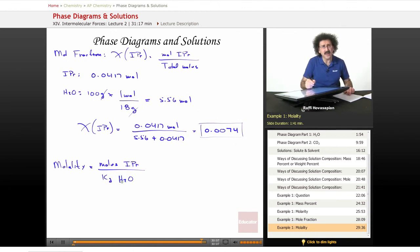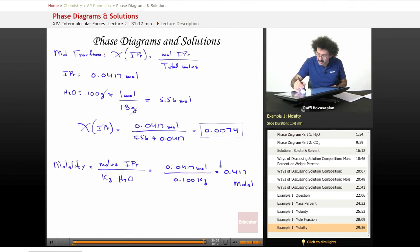Equals 0.0417 mole divided by 0.100 kilogram, right? 100 grams, 0.1 kilograms equals 0.417 molal. We say for molarity, molar. For molality, we say molal.